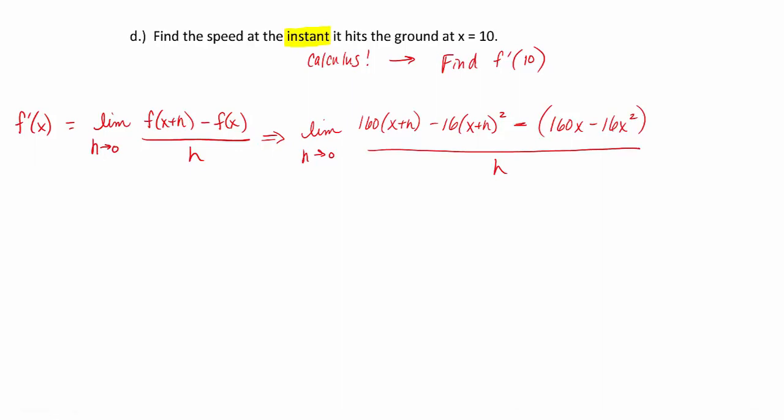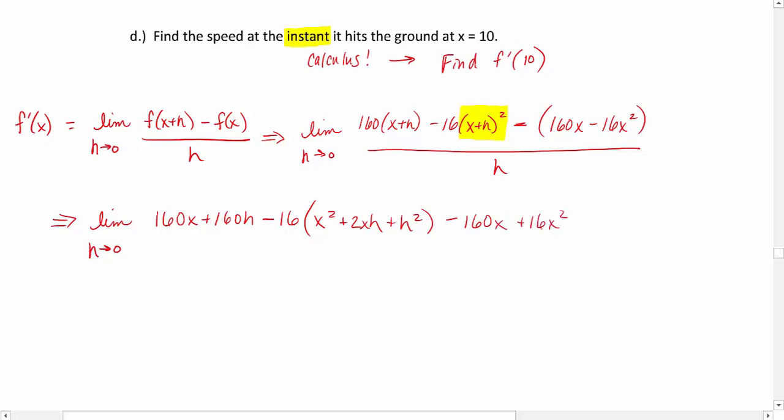We'll clean up our numerator. Remember, with (x + h)² quantity squared, you're going to want to write that twice and foil it out, or you can use the shortcut of the first one squared plus twice the product of the two terms plus the second one squared. The limit as h approaches 0, we'll have 160x + 160h - 16 times (x² + 2xh + h²), distributing my negative, and we're all over h.